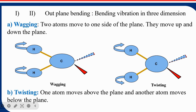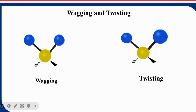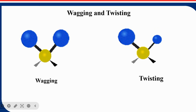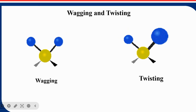Out-of-plane bending is of two types: wagging and twisting. The term wagging comes from the wagging of a tail — both atoms move to one side of the plane, either both up or both down together. In twisting, one atom moves above the plane while the other moves below the plane — like wringing a wet cloth by moving your hands in opposite directions.